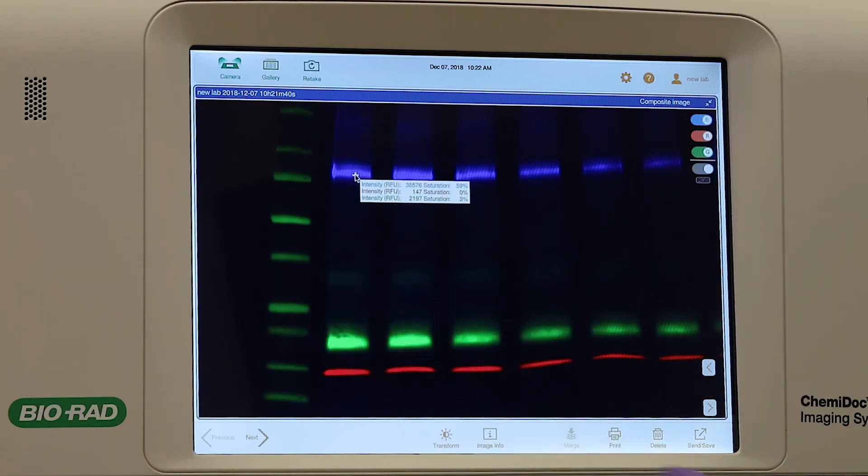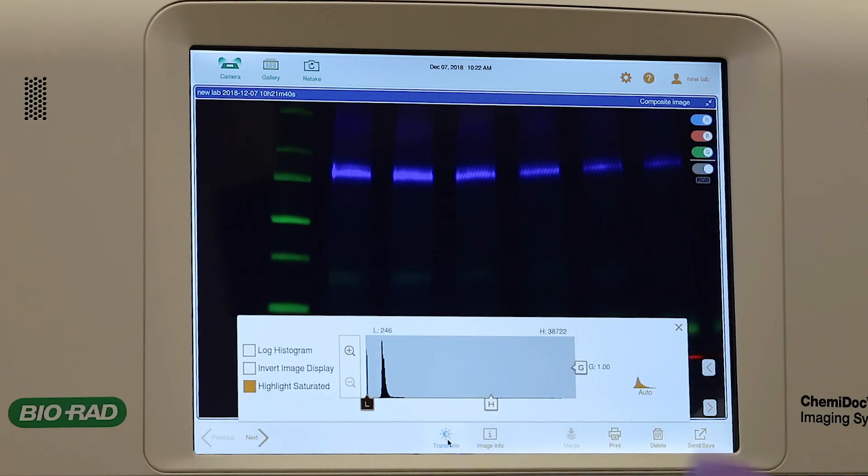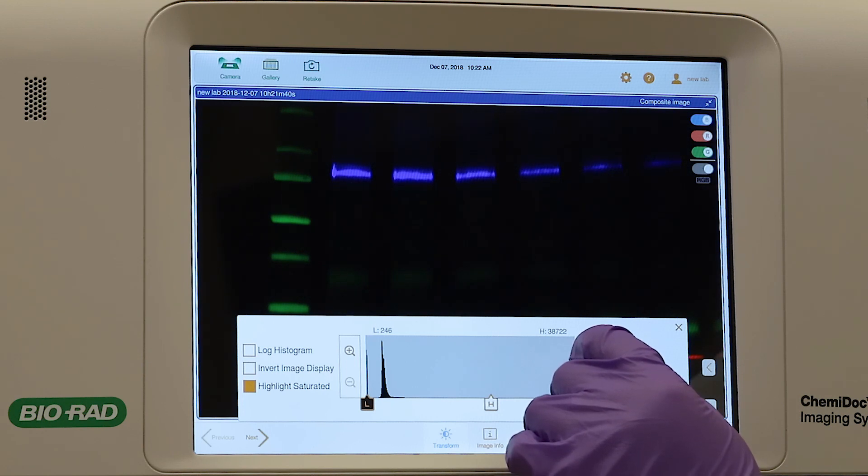To adjust image appearance, tap the Transform icon in the lower toolbar. Adjustments will be saved, but the actual data will remain unchanged.